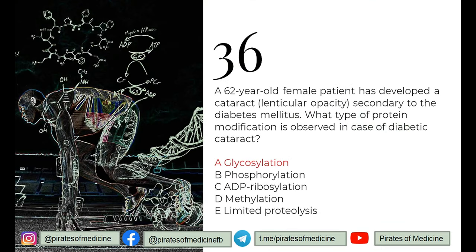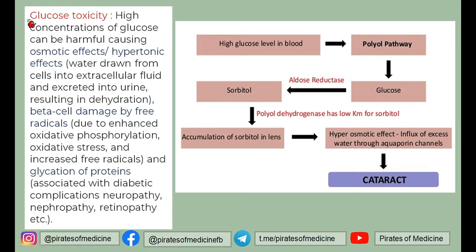Q36: a 62-year-old female patient has developed a cataract secondary to diabetes mellitus. What type of protein modification is observed in diabetic cataract? In diabetes mellitus there is a high concentration of glucose — glucose toxicity — which can have many harmful effects. First, it has osmotic effects: hyperglycemia has hyperosmolar effects, so water is drawn from cells into extracellular fluids causing dehydration. Second, free radicals are formed which can cause beta-cell damage.